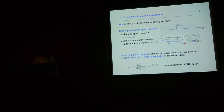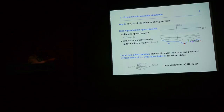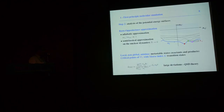We can also do chemistry with these Born-Oppenheimer energy surfaces. The local minima of the Born-Oppenheimer ground state energy surface can be identified with the reactants and products of chemical reactions. The critical points with Morse index 1 — saddle points with only one negative eigenvalue — can be identified with the transition states from a chemical viewpoint.